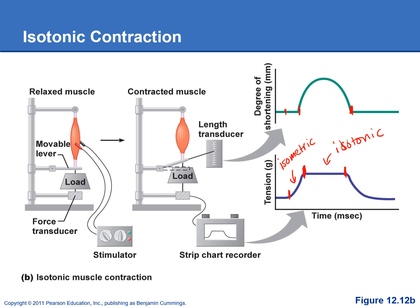An isotonic contraction is where the tension or force stays the same while the length of the muscle shortens, because we've generated enough force to overcome the load and move it. We use the same amount of force to move the load while the muscle is shortening. Notice that our isotonic contraction started off as isometric — we had to generate enough force to overcome the load, and then we could start lifting it, shortening the muscle, and it turned into an isotonic contraction.